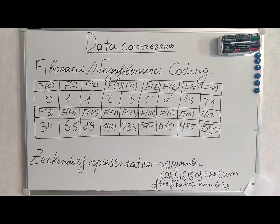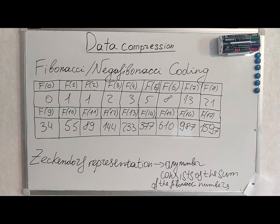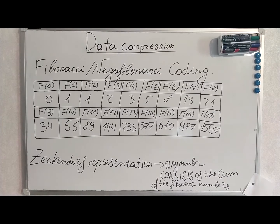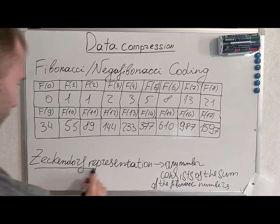For the sake of simplicity, we have the Fibonacci sequence — not negative Fibonacci. We will first work with integers, specifically non-negative numbers. Here is a very important concept on which Fibonacci and negative Fibonacci coding is built: the Zeckendorf representation.